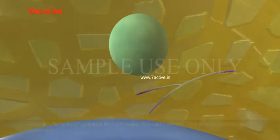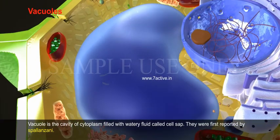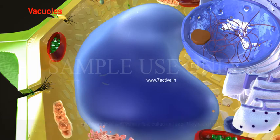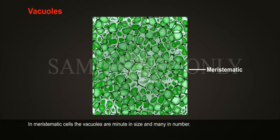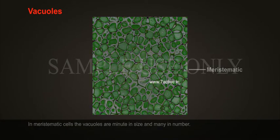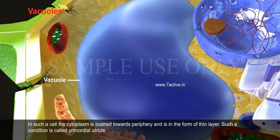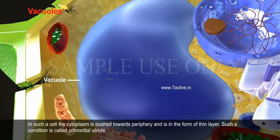Vacuoles are cavities of the cytoplasm filled with watery fluid called cell sap. They were first reported by Spallanzani. In meristematic cells, vacuoles are minute in size and many in number. In permanent cells, the vacuole is large in size, single, and occupies the center of the entire cell. In such a cell, the cytoplasm is pushed towards the periphery and forms a thin layer — a condition called primordial utricle.